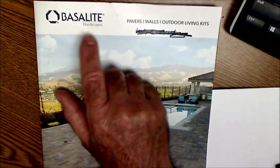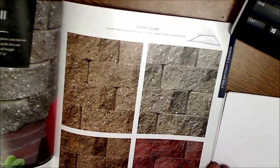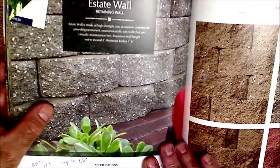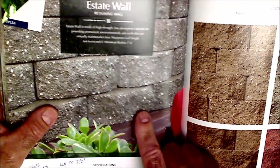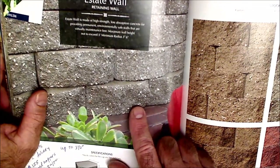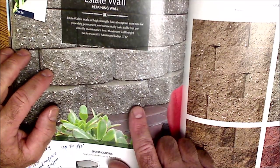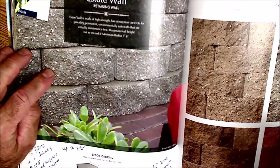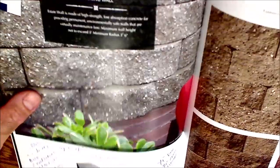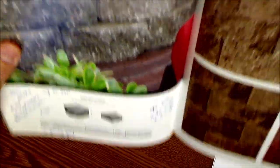All right. These are Basalite Hardscapes. I'm going specifically over here to the estate wall blocks. These kind of seem to work out the best. You can get this from any one of your suppliers. I really like working with a legitimate supply company rather than a home improvement store. They just know what they're doing. They deliver beautifully. And then once you kind of pick out the block you want, then the specs are down here.